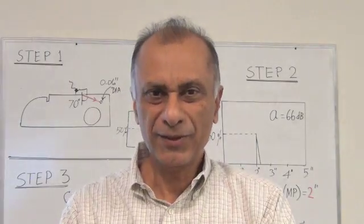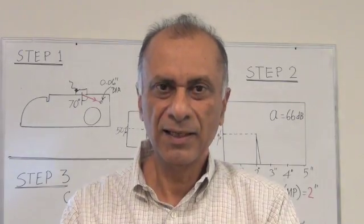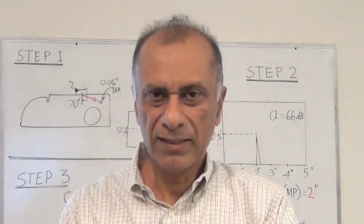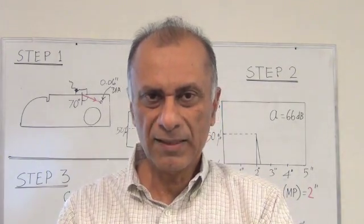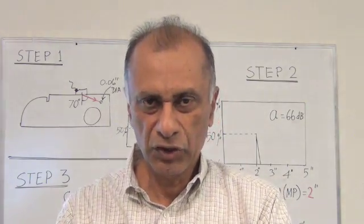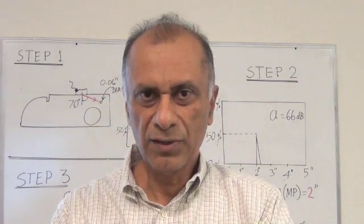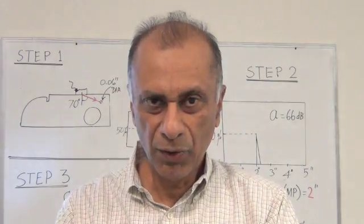This presentation is on angle beam inspection of structural steel welds using AWS D1.1 code. The code limits the inspection to thickness over 5/16 of an inch and requires the use of very specific transducers and calibration holes.